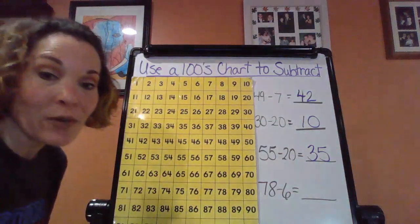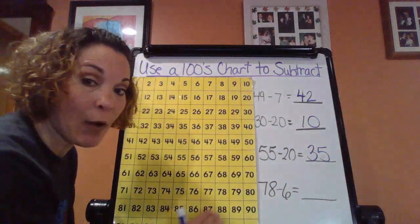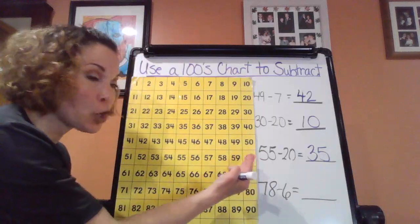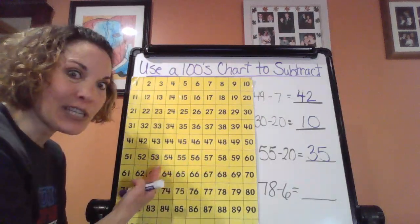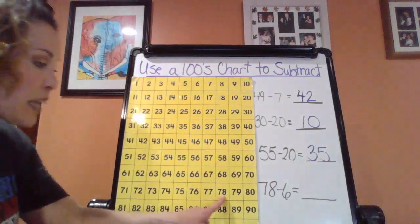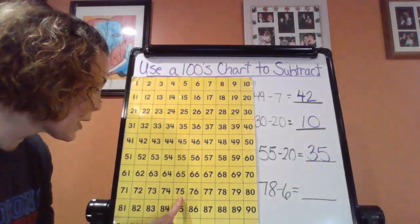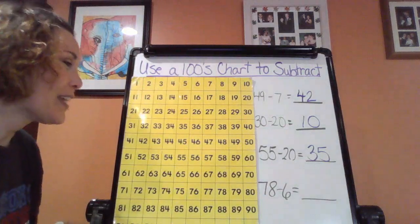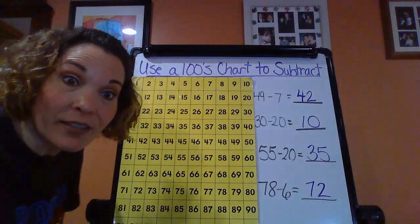All right. So now let's take a look at that last one. I have 78 minus 6. So now I'm going back to a single digit number. Remember, single digits — we're going to keep it simple. We are just going to move to the left, count by ones because the numbers are decreasing. So what number do I want to start at? I want to start on 78. I've got to find my 78, and I want to count back 6: 1, 2, 3, 4, 5, 6. What would my answer be? 72. So my difference here — 78 minus 6 is going to give me 72.